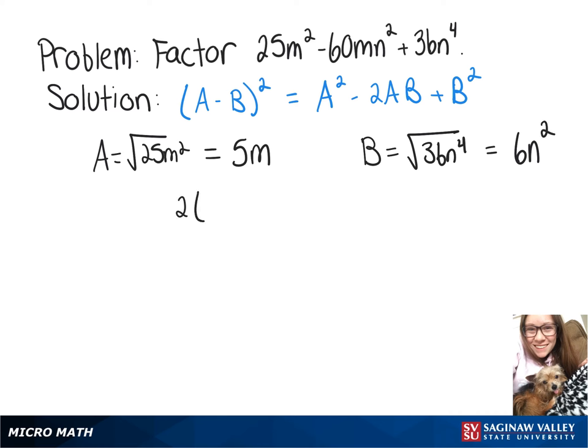Now we have to check that 2AB equals our middle term. So 2 times 5m times 6n squared gives us 2 times 5 is 10 times 6 is 60, then we have m and n squared, which is our middle term.